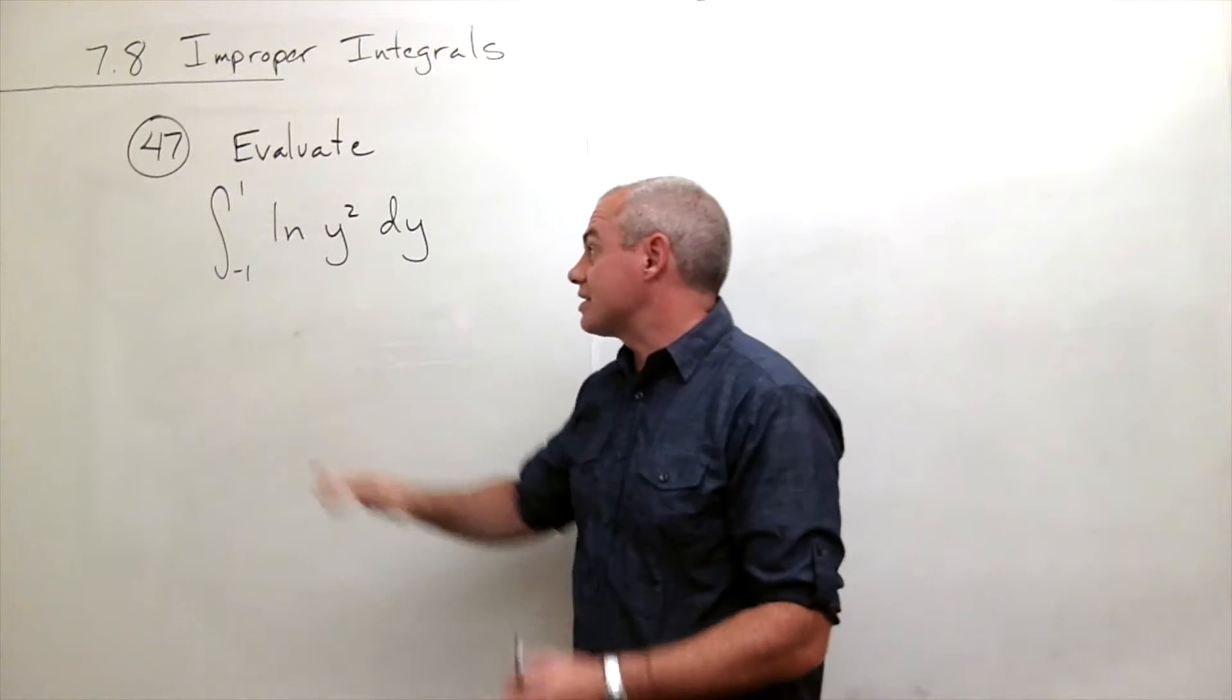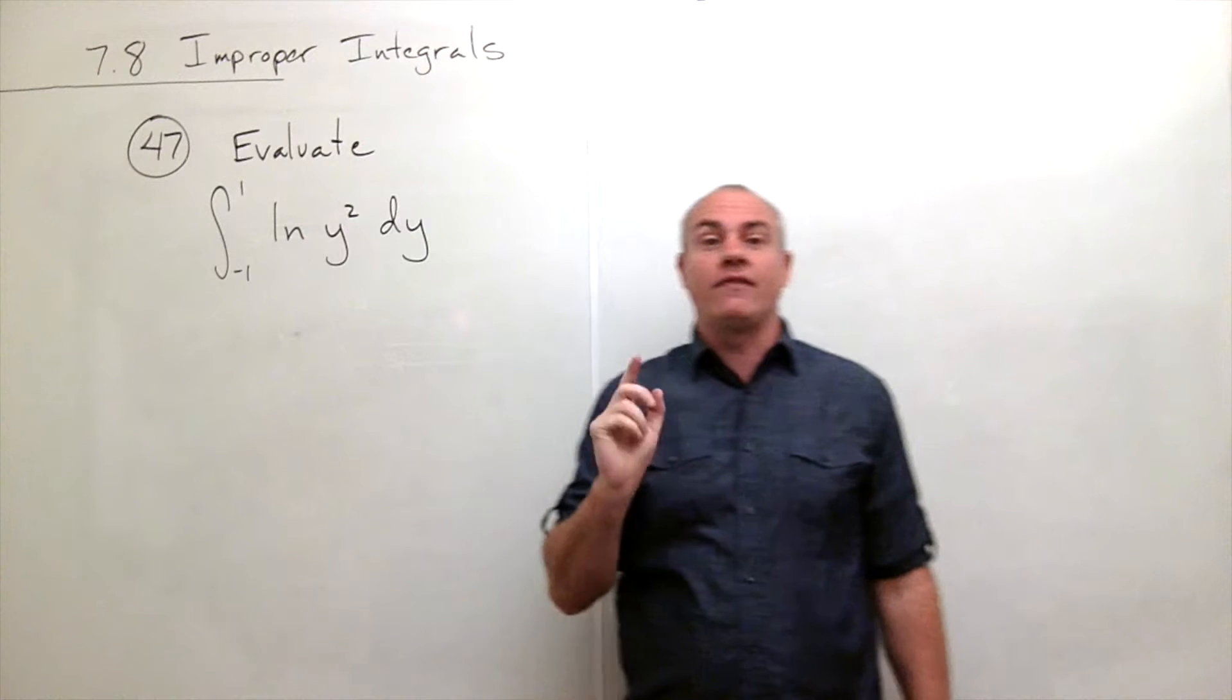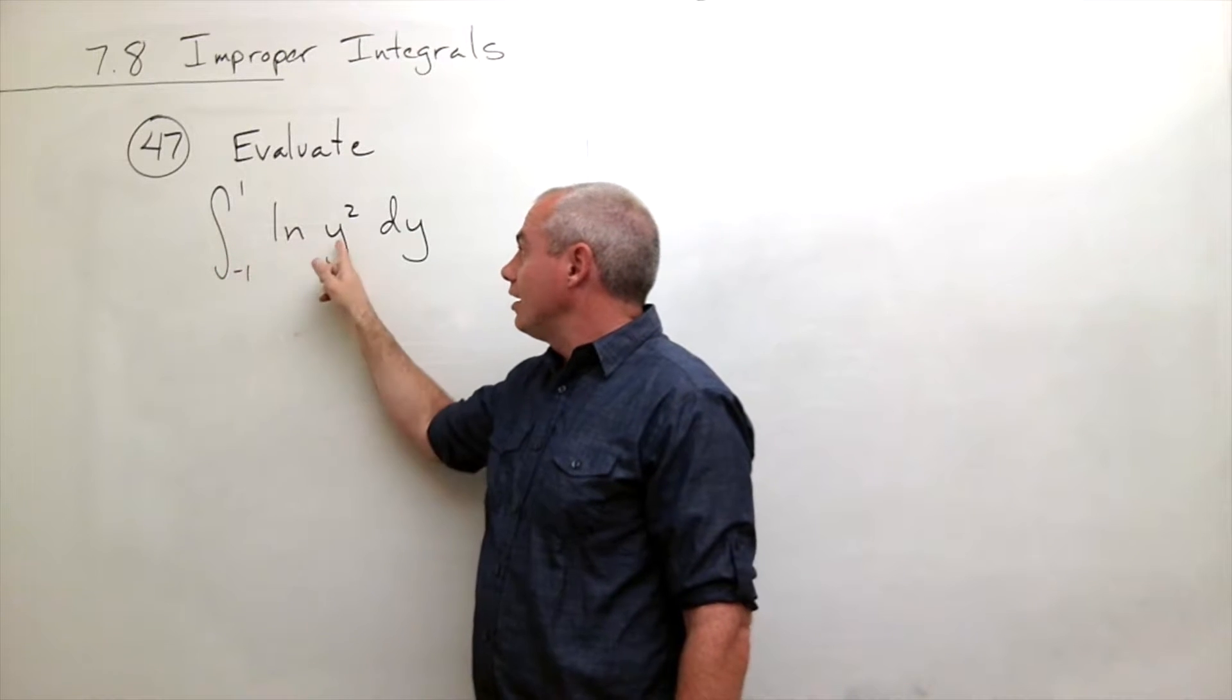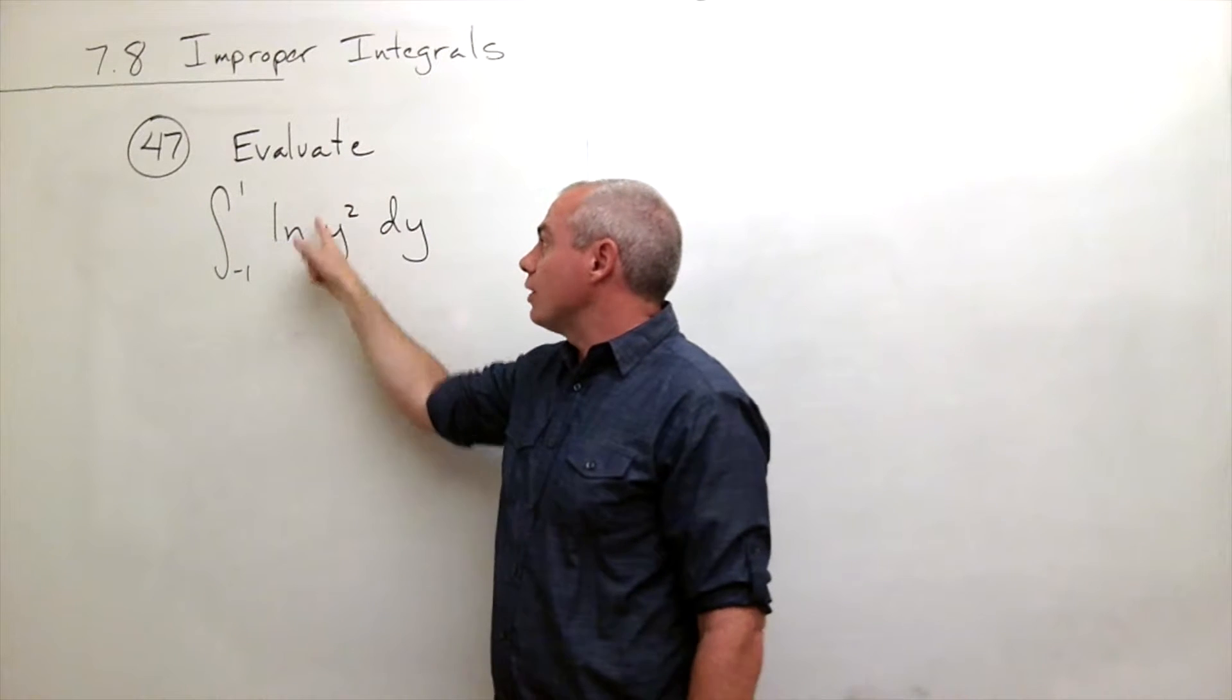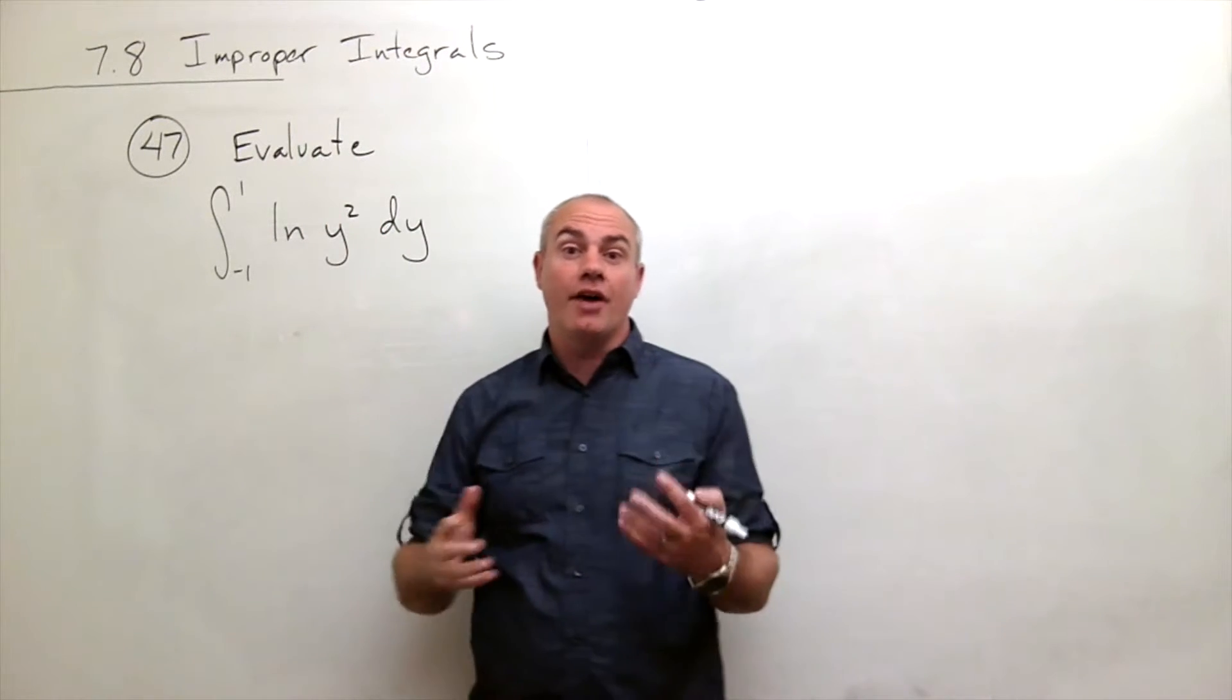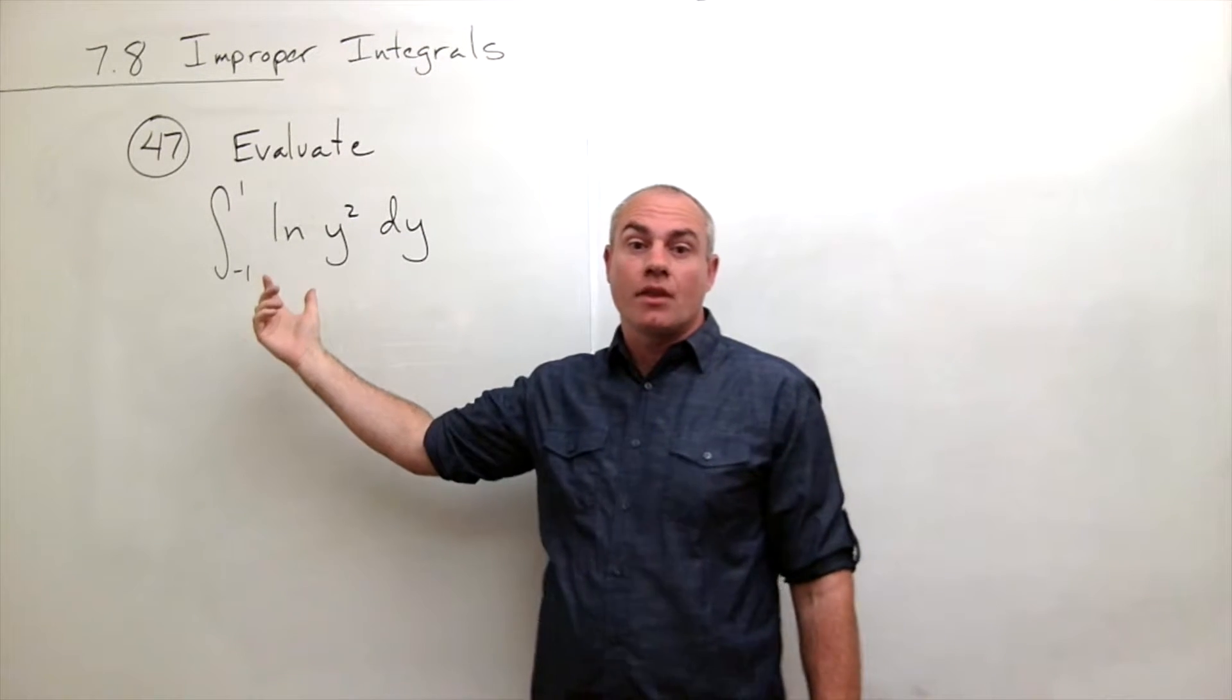We really should break this up into two integrals from -1 to 0 and from 0 to 1. But I'm going to make life a little easier on us. Wait a second, if I plug in a negative value here, I square it. And if I plug in a positive value, I square it. So it doesn't matter if I'm plugging in negative values or positive values, I still get a positive value. In other words, this thing has some sort of even symmetry about the y-axis.